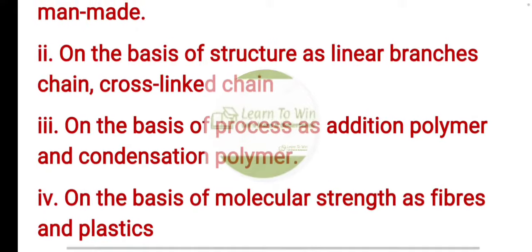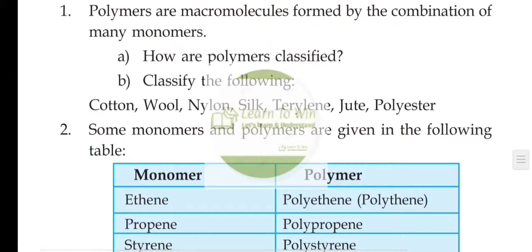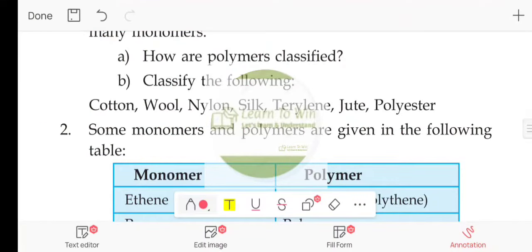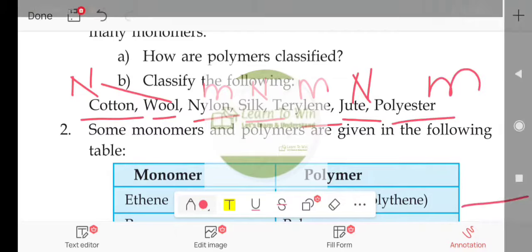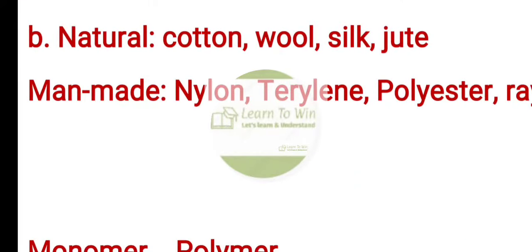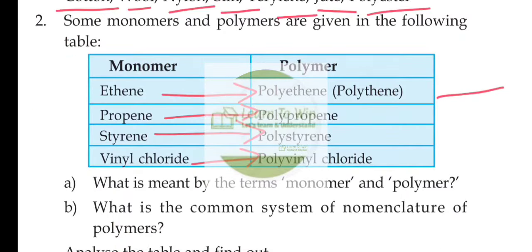We classify polymers as natural and man-made. Natural fibers: cotton, silk, jute, wool. Man-made fibers: nylon, terylene, polyester. We classify the fibers accordingly.